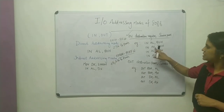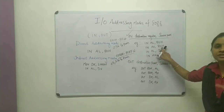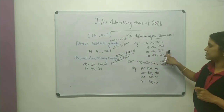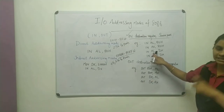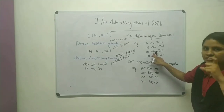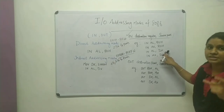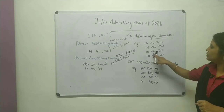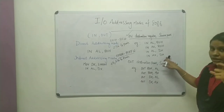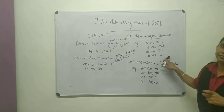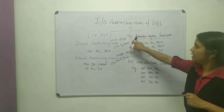IN AX, 80H means AX gets 16-bit data from I/O port address 80H. IN AL, DX means AL gets 8-bit data from the I/O port address given by DX — this is indirect addressing mode. IN AX, DX means AX gets 16-bit data from the I/O port address given by DX. That covers the IN instruction specified using the IN opcode.